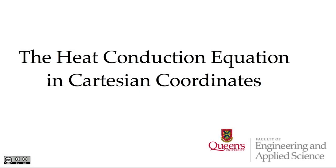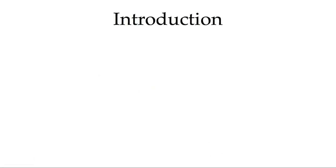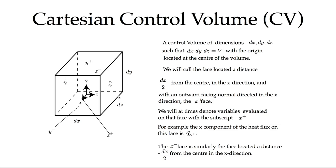In this video, we're going to derive the heat conduction equation in Cartesian coordinates. We're going to make use of Fourier's Law of Conduction to account for conduction heat transfer in and out of the control volume. We're going to allow for changes of energy in time within the control volume, and allow for the conversion of other forms of energy into thermal energy within the volume. We'll apply conservation of energy to a Cartesian control volume.